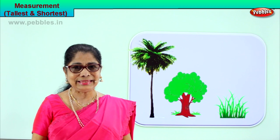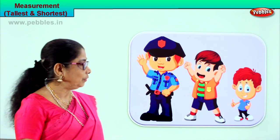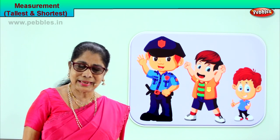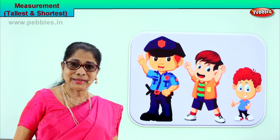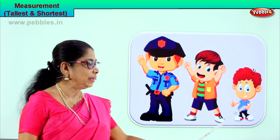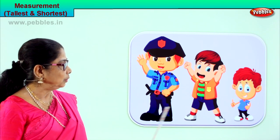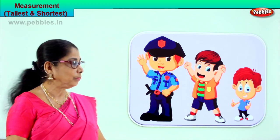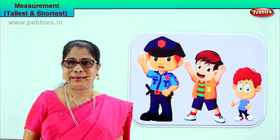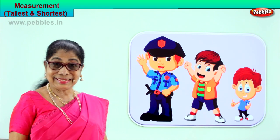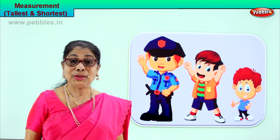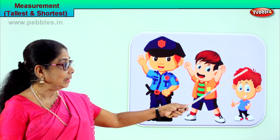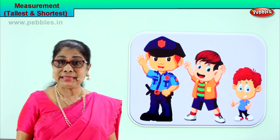Shall we take another exercise? Look what you have here — we have three persons here. In your class also you have them, isn't it? You will say, 'Oh, she's taller, I'm the shortest.' Look, observe and tell me. There are three persons here: a policeman, a little girl, and another little boy. Now look — they are all standing in a line, in height order. Who is the shortest of the three? This little one is the shortest of the three persons here.